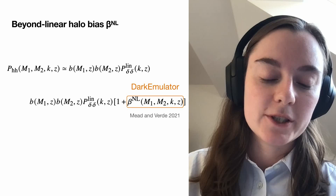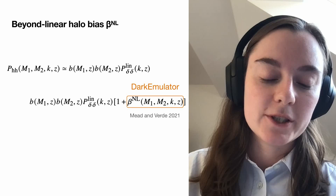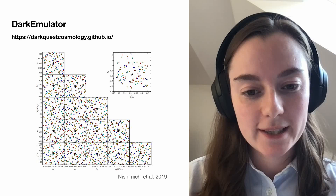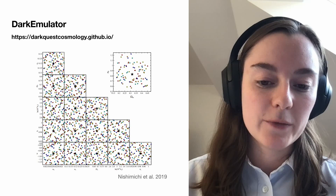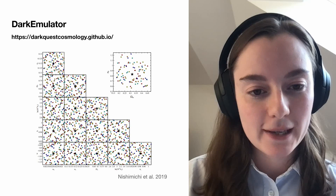We use the dark emulator, which is based upon the dark quest simulations. In this plot, every point is where a dark quest simulation has been run, and the stars are the fiducial flat cosmology. What the dark emulator allows you to do is interpolate between any point in parameter space — it was very easy to use and I would strongly recommend it.